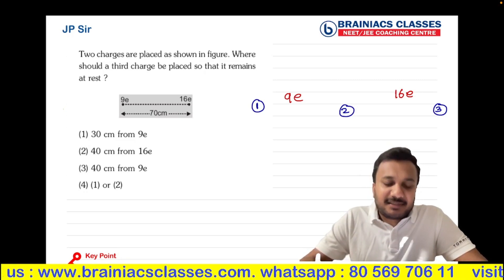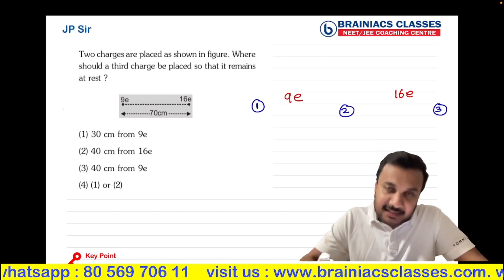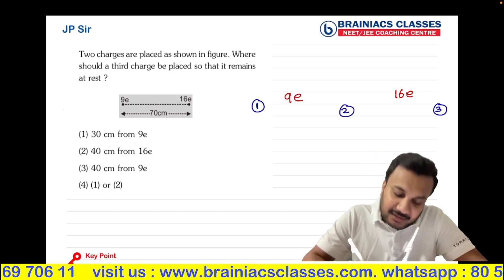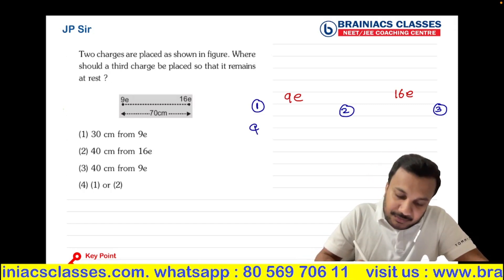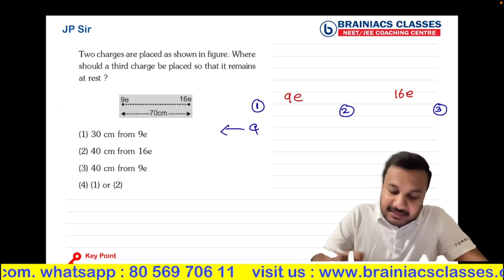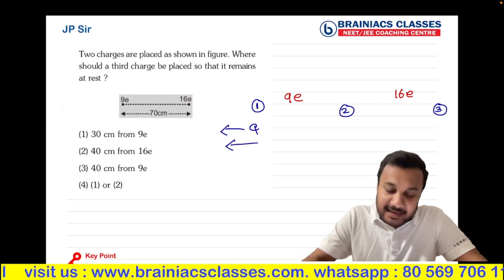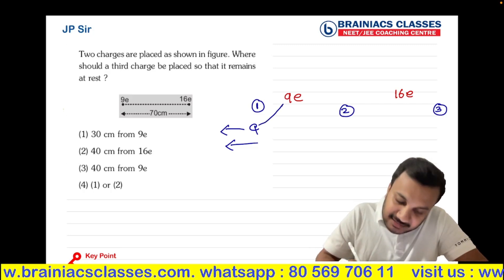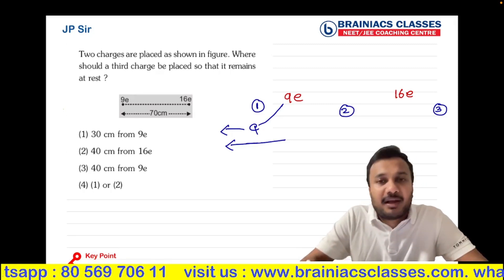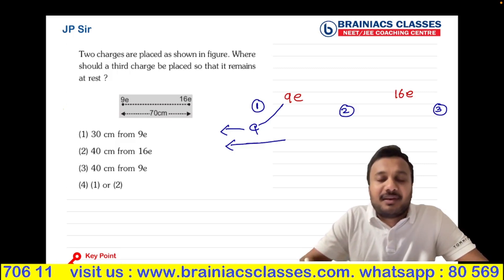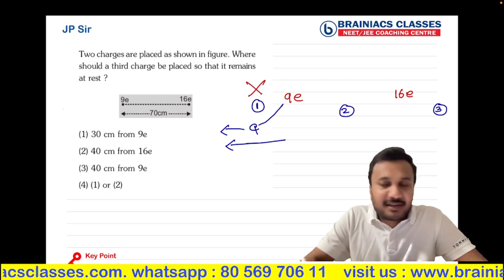I can place the 3rd charge Q at three positions: left of 9E, between the two charges, or right of 16E. If I place it at position 1, to the left, both 9E and 16E will repel it, producing two forces in the left direction — so the charge moves left. Position 1 is not correct.